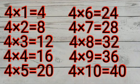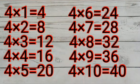Four sixes are 24. Four sevens are 28. Four eights are 32. Four nines are 36. Four tens are 40.